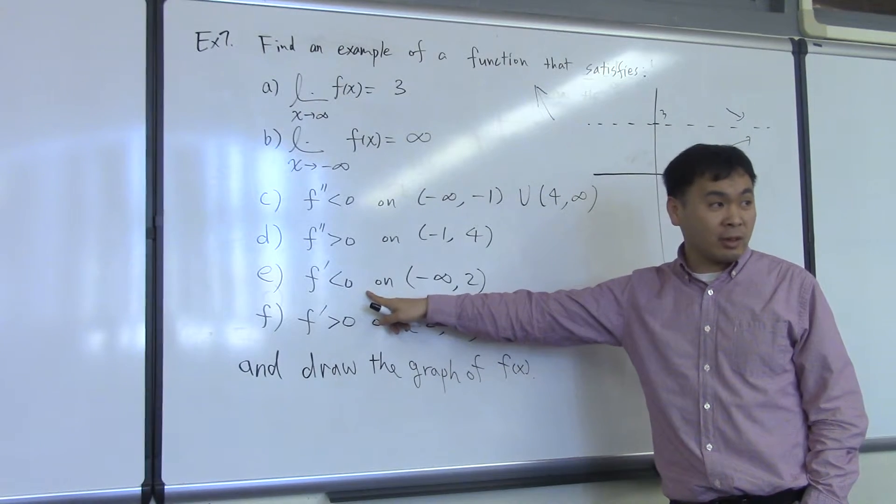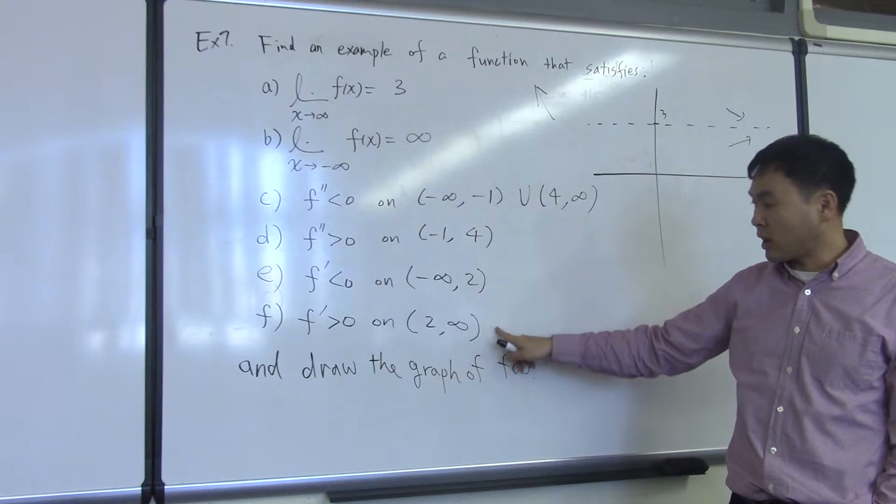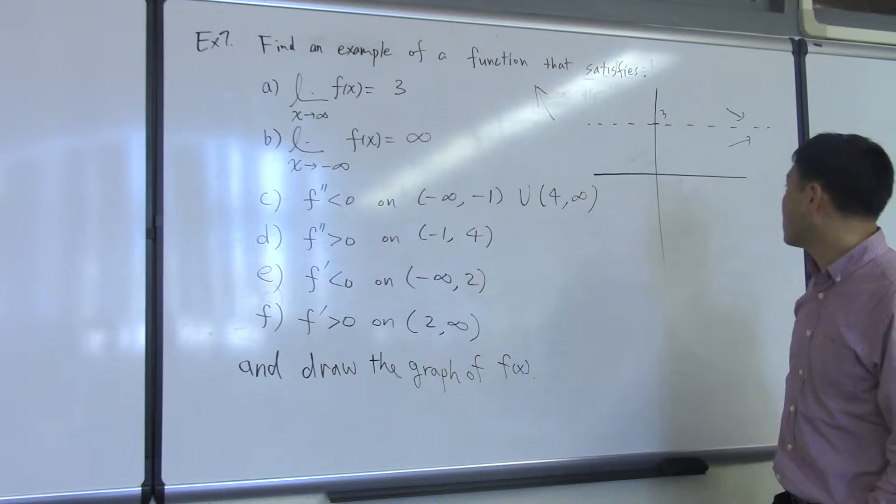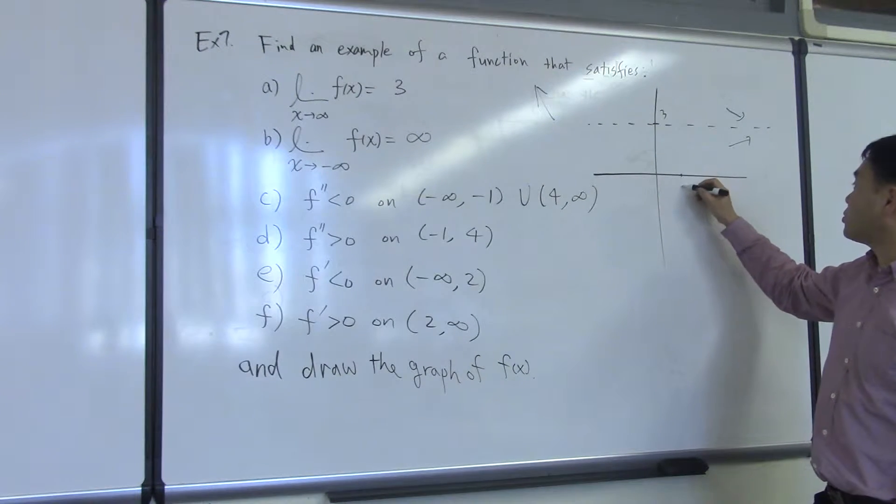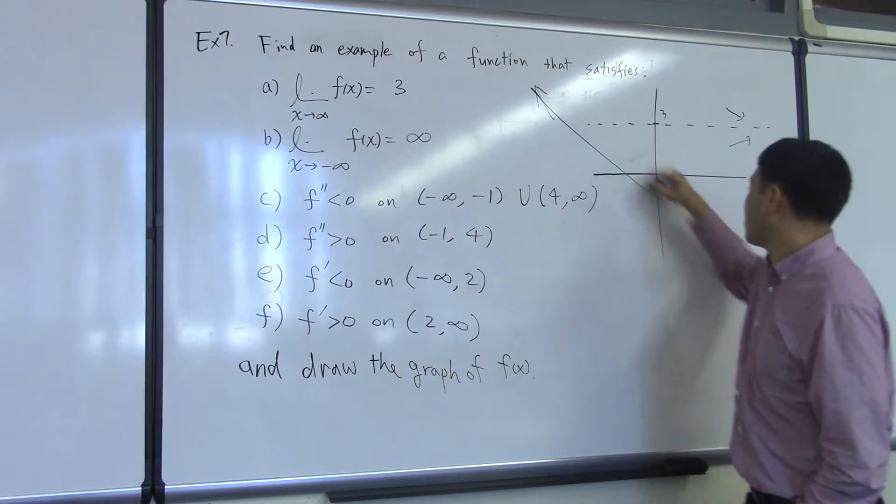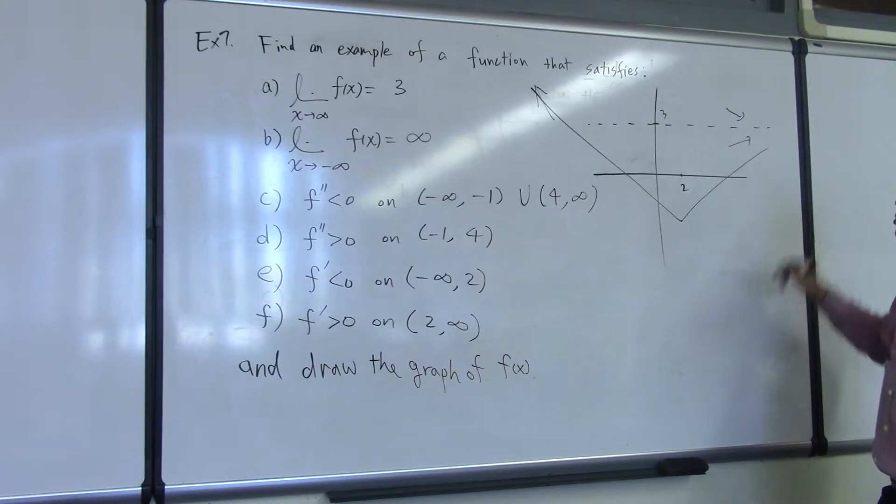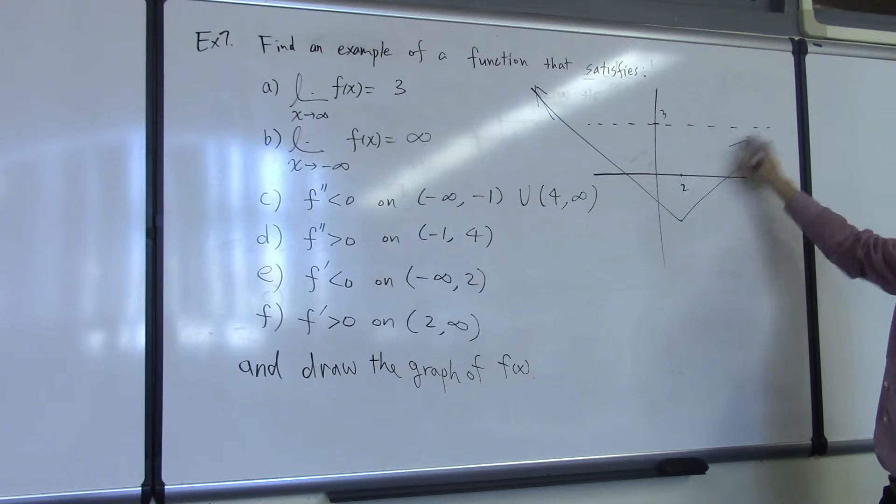F should be decreasing if the derivative is negative. F should be decreasing before 2 and after 2 it should be increasing. So if I say this is 2, it should be decreasing up to 2 and then increasing after 2. So I guess it's not this one. It has to be like this.